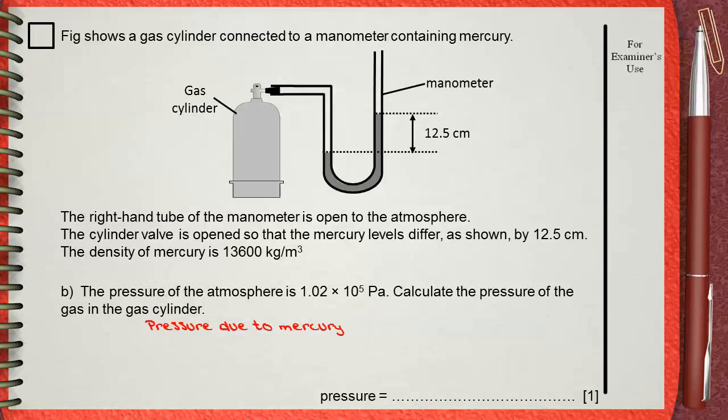So the total pressure in the gas cylinder will be the pressure due to mercury that we just calculated in the previous question. This will be added to the pressure due to air above the mercury, which is the normal atmospheric pressure.